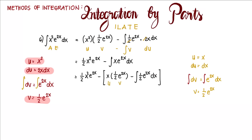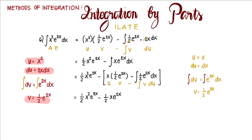Using the formula u v minus the integral of v du, we evaluate to get one half x squared e to the power of 2x minus one half x e to the power of 2x. Distributing the negative sign: a negative times another negative becomes positive, giving plus one half times the integral of one half e to the power of 2x dx. This remaining integral can already be integrated using basic integration formulas.